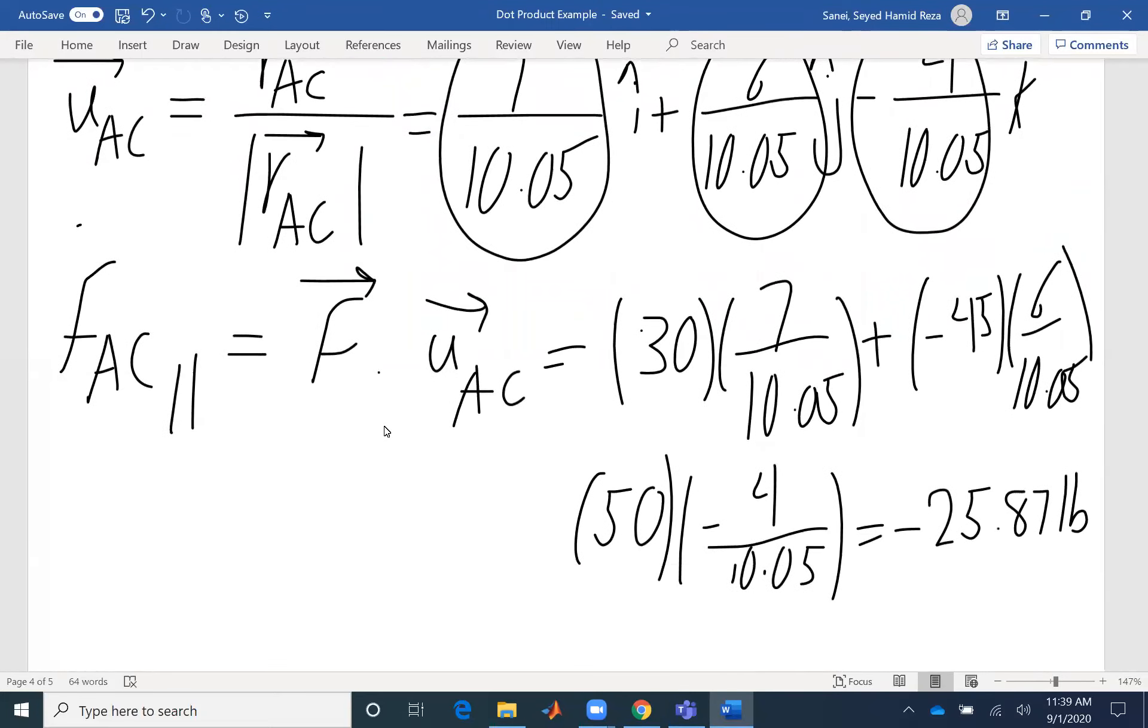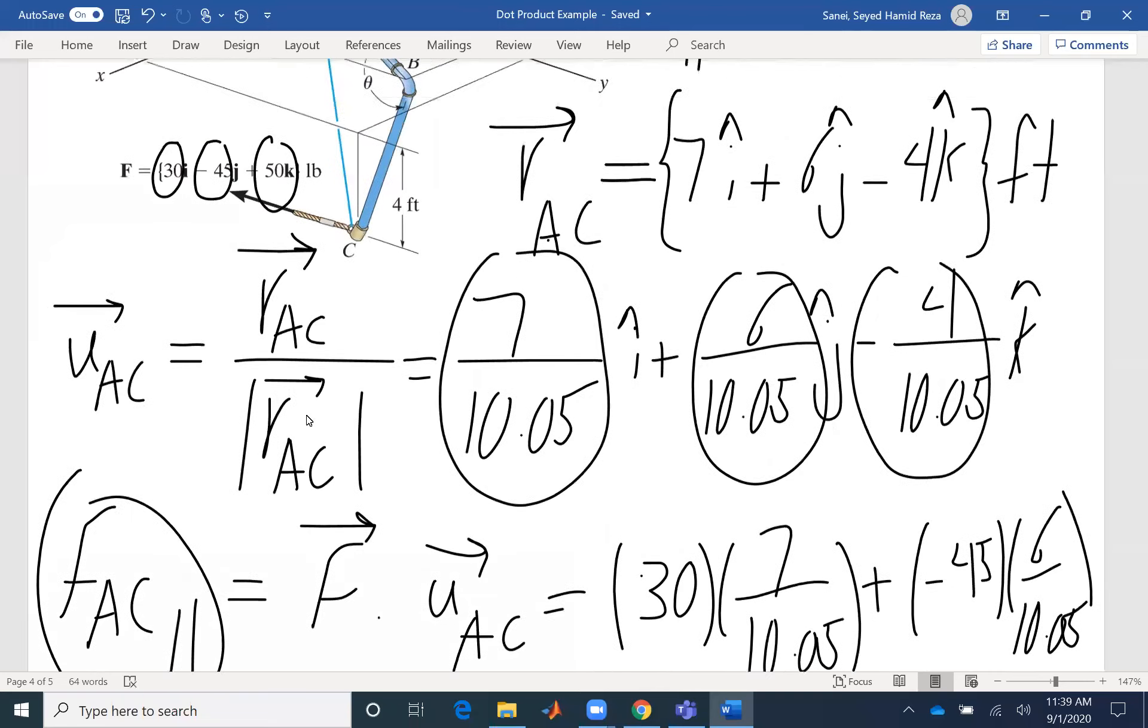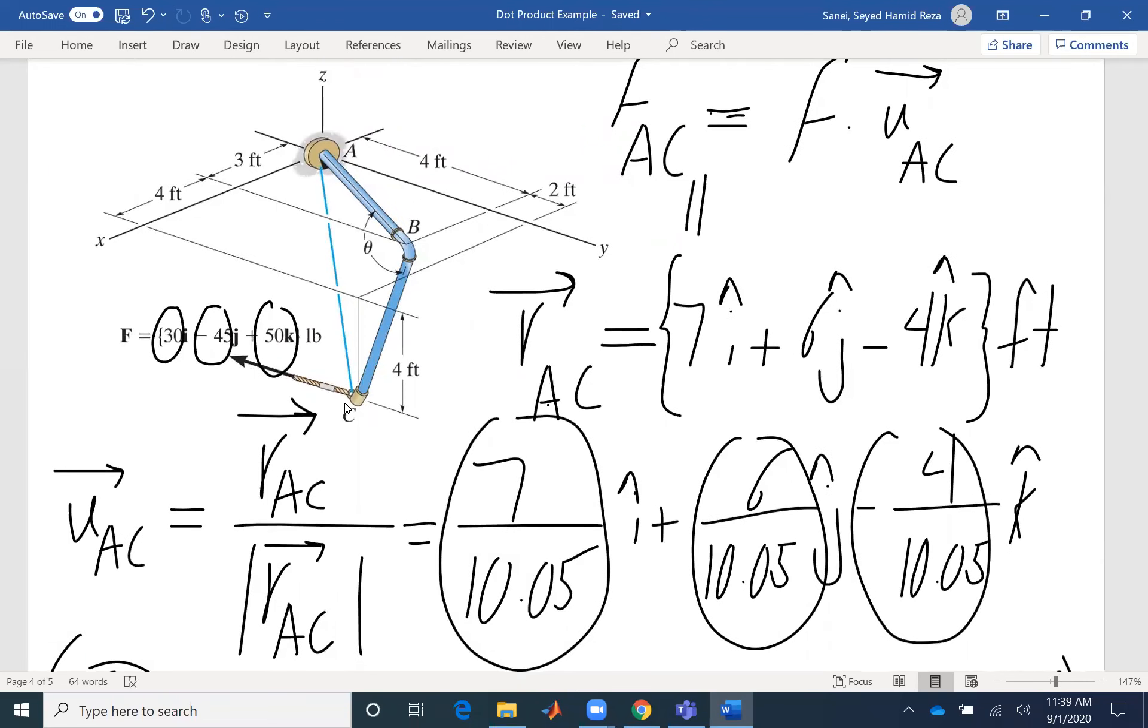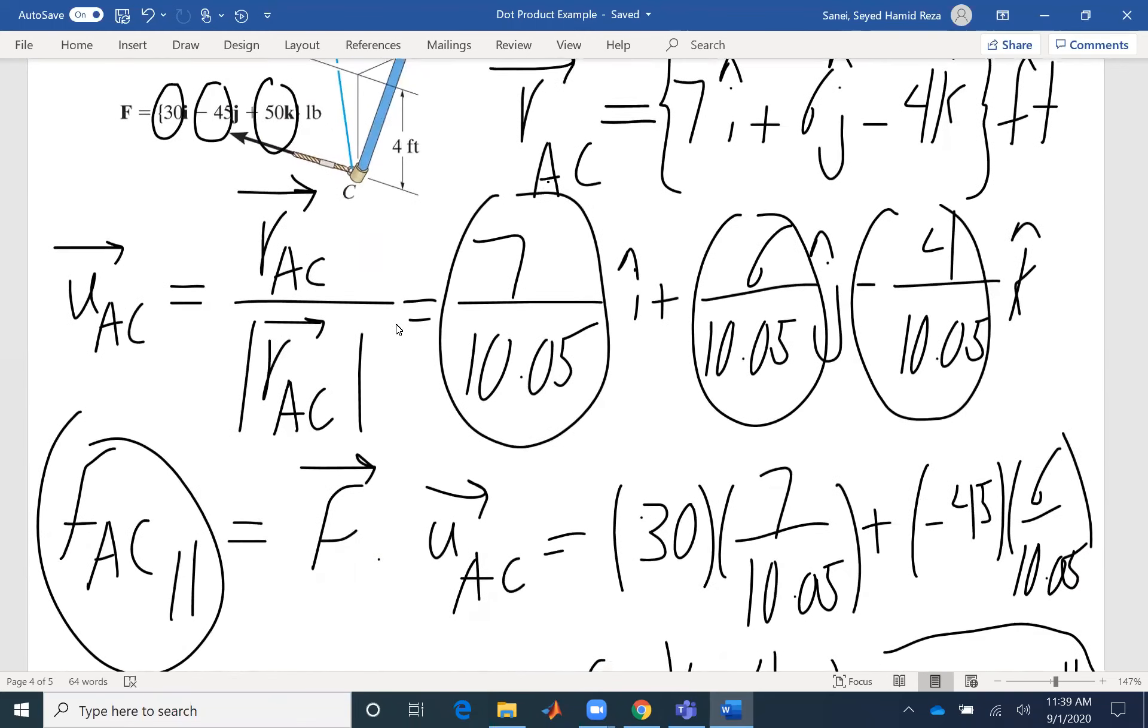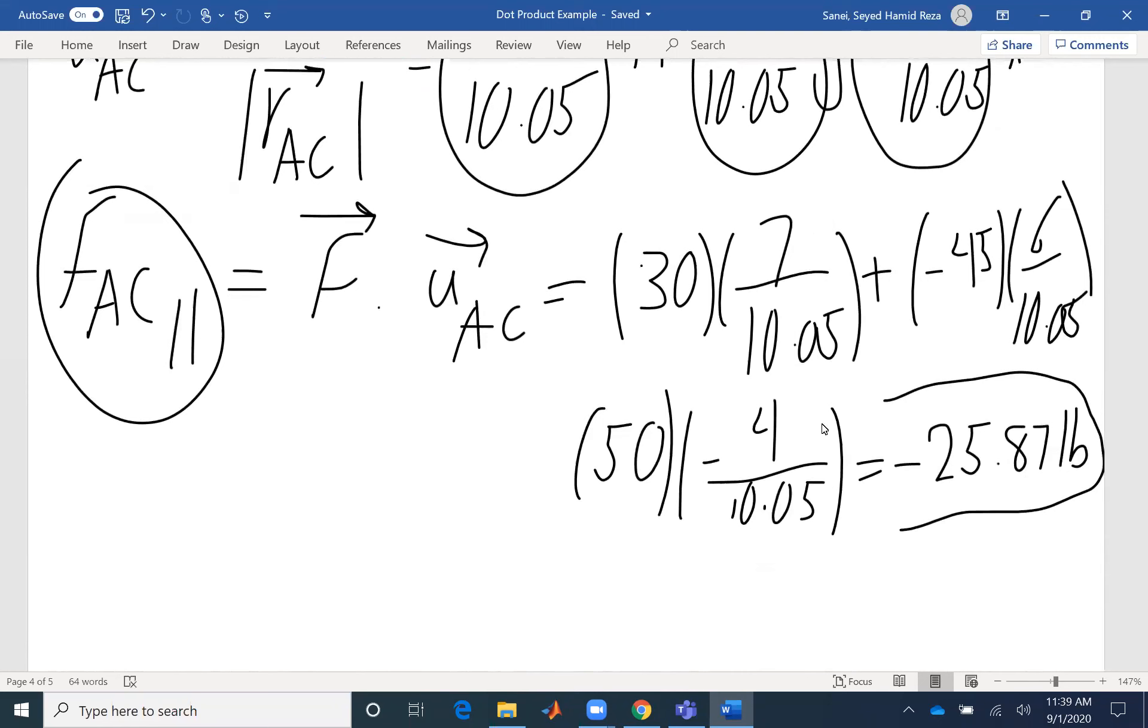I found my FAC component. It's a negative value, which means that the projection is actually from C to A, not A to C. That's why we get a negative value. But that's not enough for this problem. The problem is asking for expressing the component in Cartesian vector.